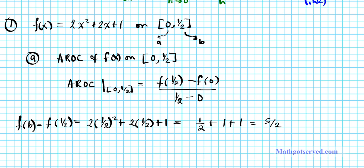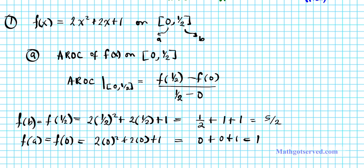Now, f of a, the value of the function at the left endpoint, f of 0 is simply going to be 2 times 0 squared plus 2 times 0 plus 1. And you can clearly see that you have 0 plus 0 plus 1, which equals 1.